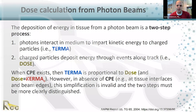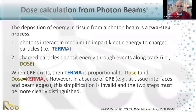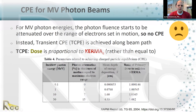Dose calculation from photon beams can be broken into a two-step process. The first is radiation transport, where photons interact in the medium to impart kinetic energy to charged particles — this is the TERMA step. The second is dose deposition, where charged particles deposit energy along their tracks. When charged particle equilibrium exists, TERMA is proportional to dose and dose equals collision KERMA. However, in the absence of CPE — such as at tissue interfaces and beam edges — this is invalid and the two steps must be more clearly distinguished.